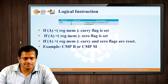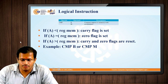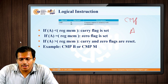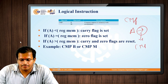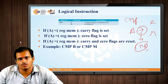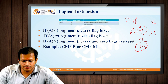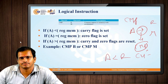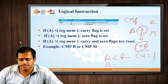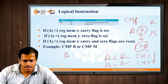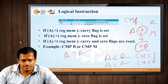The next instruction is CMP — Compare. Here the accumulator content is compared with either the register value or the memory location value. If the accumulator content is less than the register value, CY is set to 1. If the accumulator content is equal to the register content, CY is 0. If the accumulator content is greater than the register content, CY is also 0.